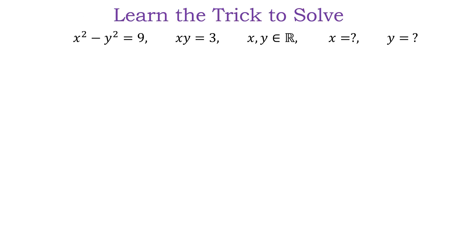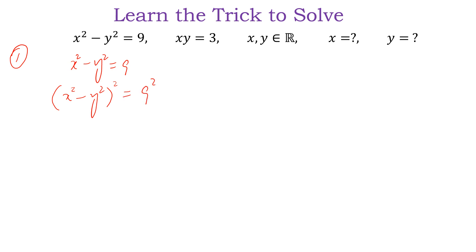We are going to solve this question by two methods. The first method: we take x squared minus y squared is equal to 9, then we take the square of both sides. We open the whole square and we can write x to the power 4 plus y to the power 4 minus 2x squared y squared is equal to 81.